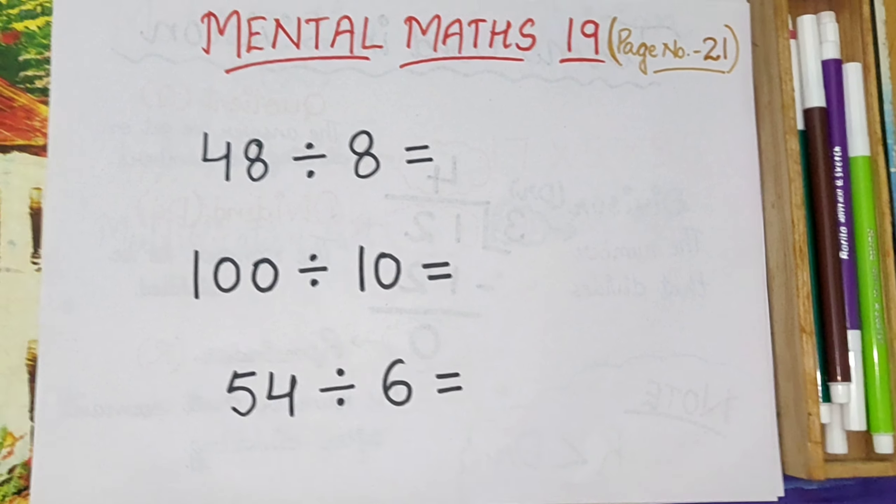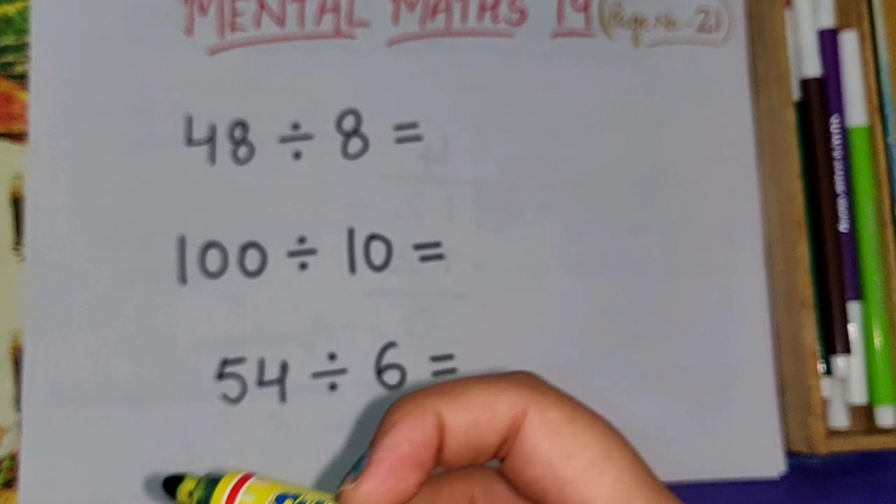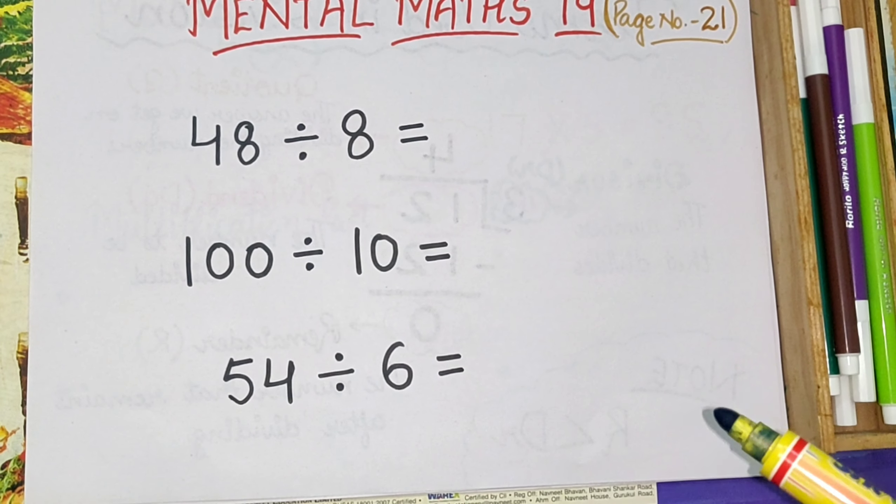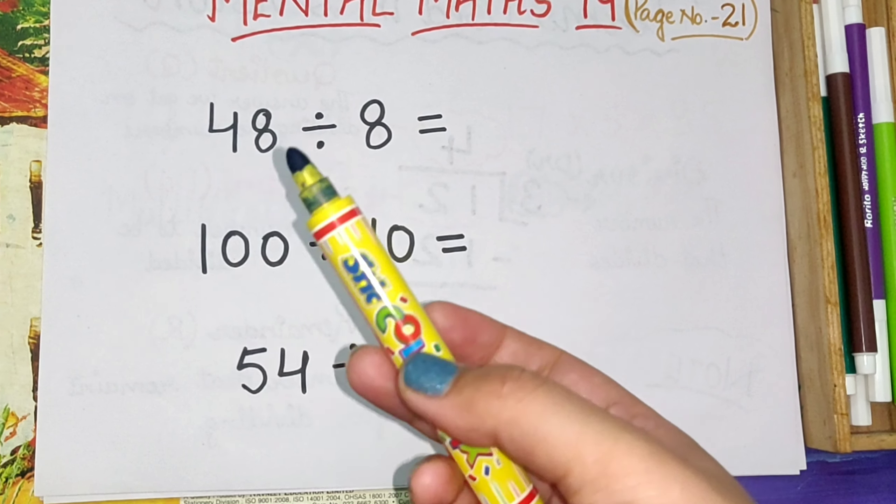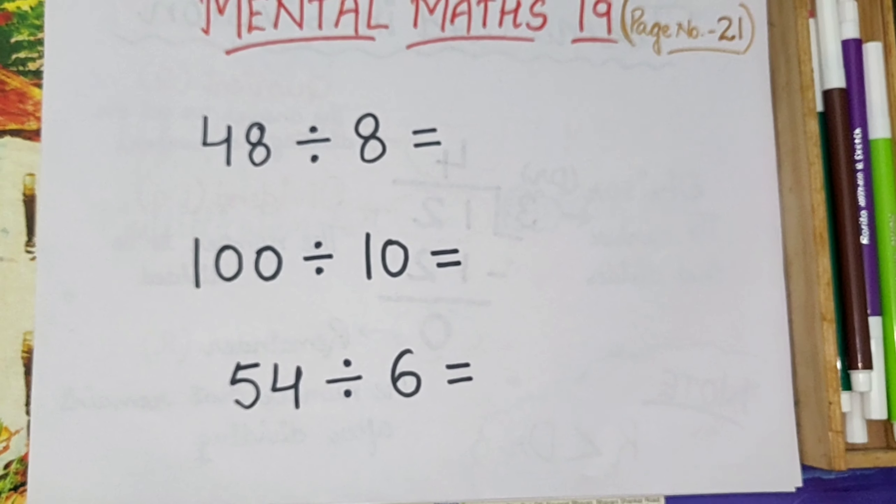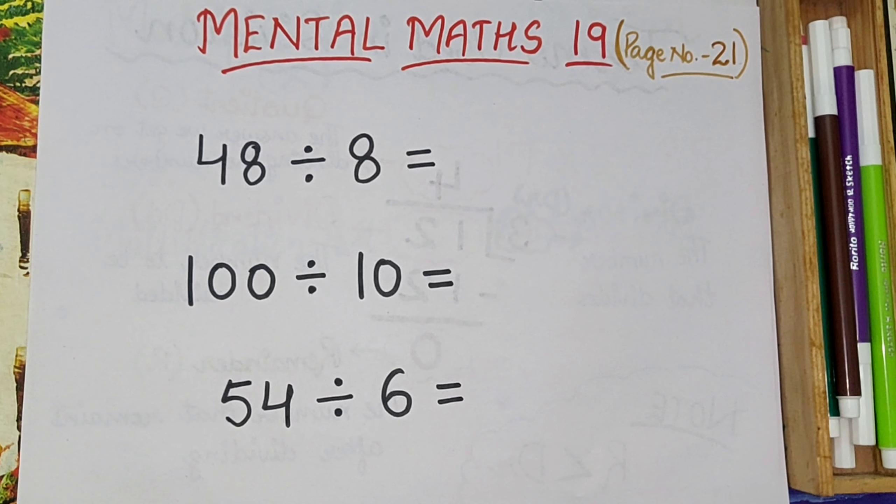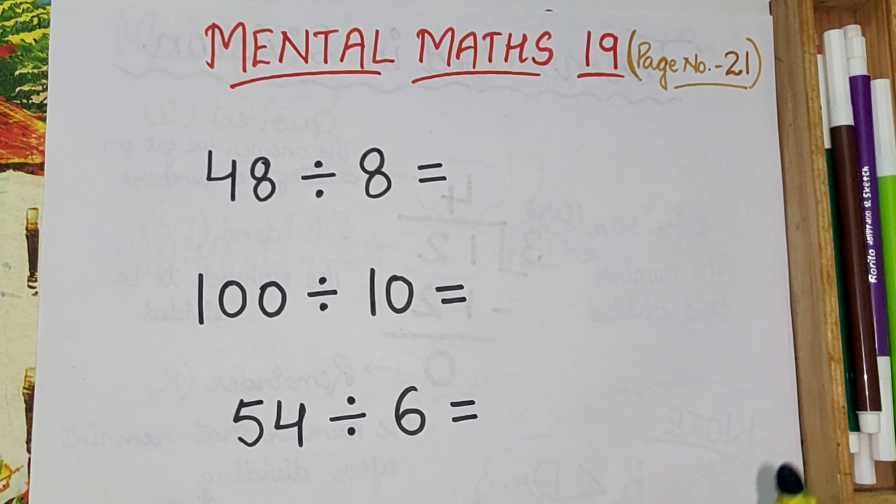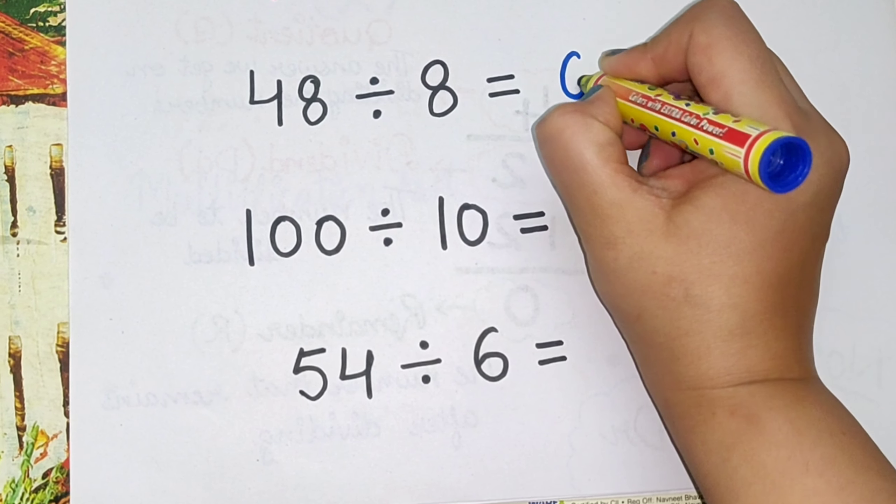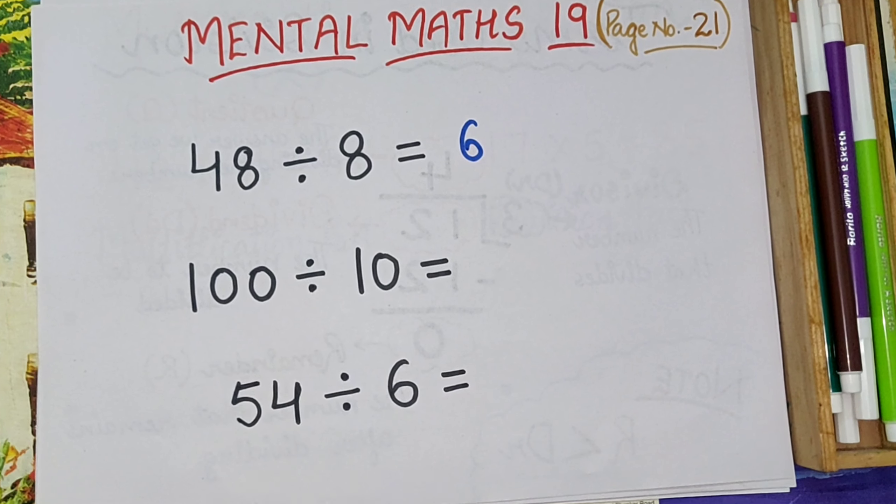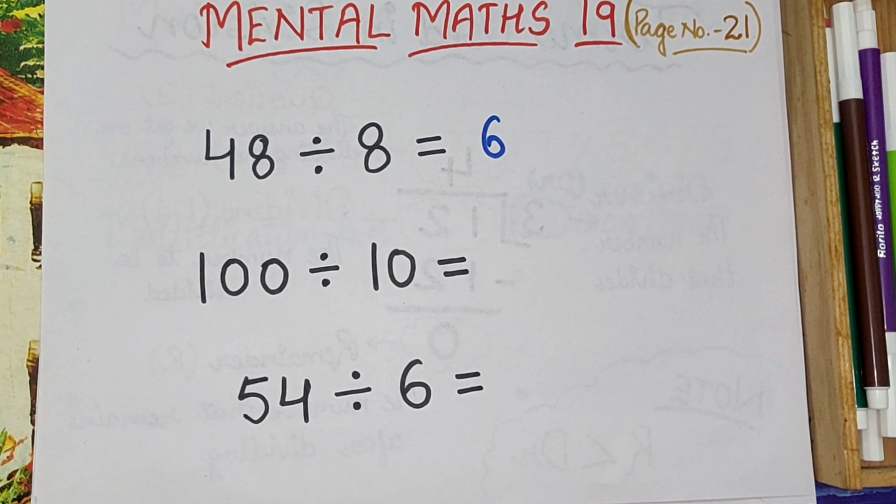Let's do it. 48 is divided by 8. Now how can we do it? We know table of 8, everybody has learned table of 8, right? So 48, now we need to find out on which number does 48 come in table of 8. That is 6. So here our answer is 6, and 6 is the quotient here.